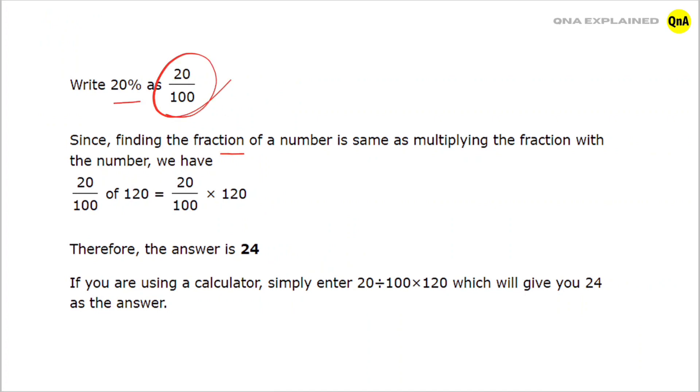Since finding the fraction of a number is the same as multiplying the fraction with the number, we have 20 upon 100 of 120, which is equal to 20 upon 100 into 120.